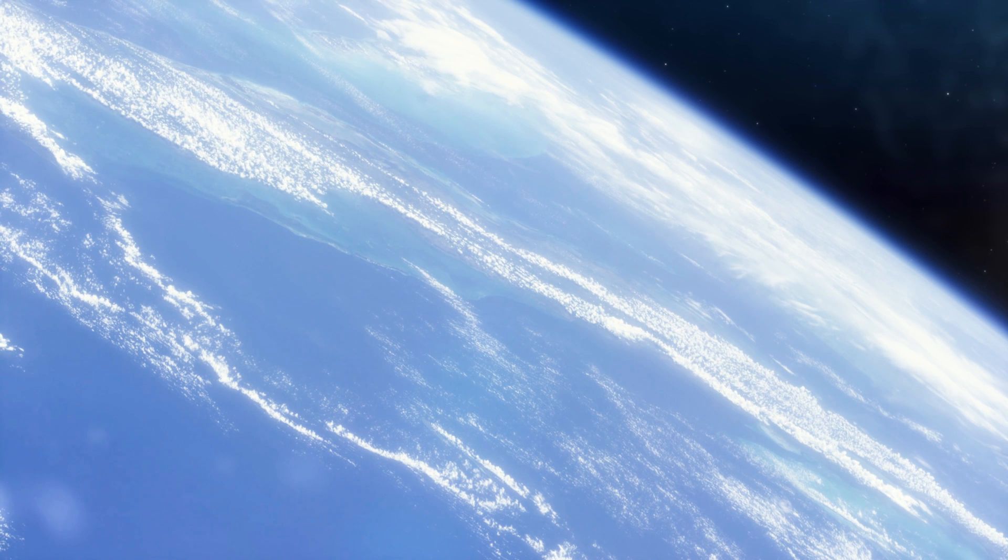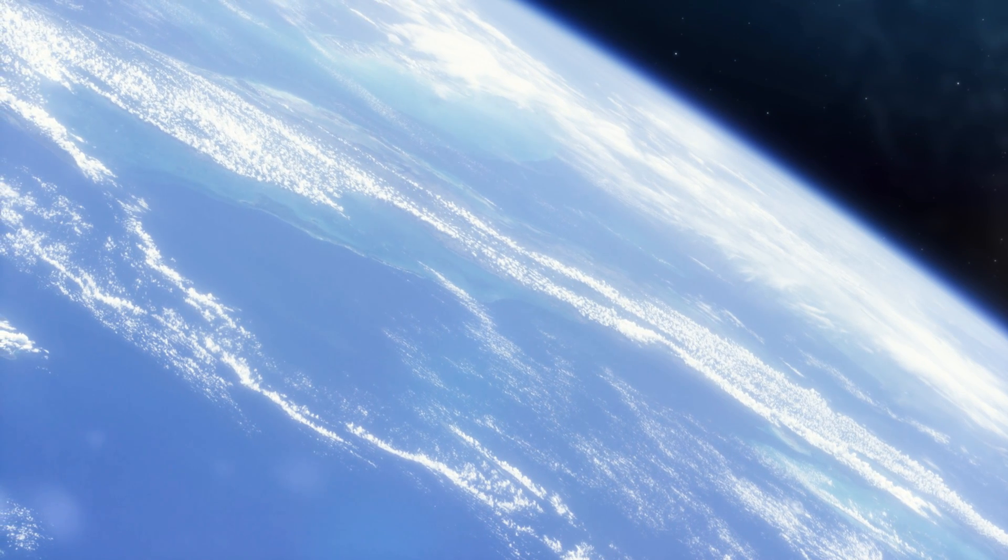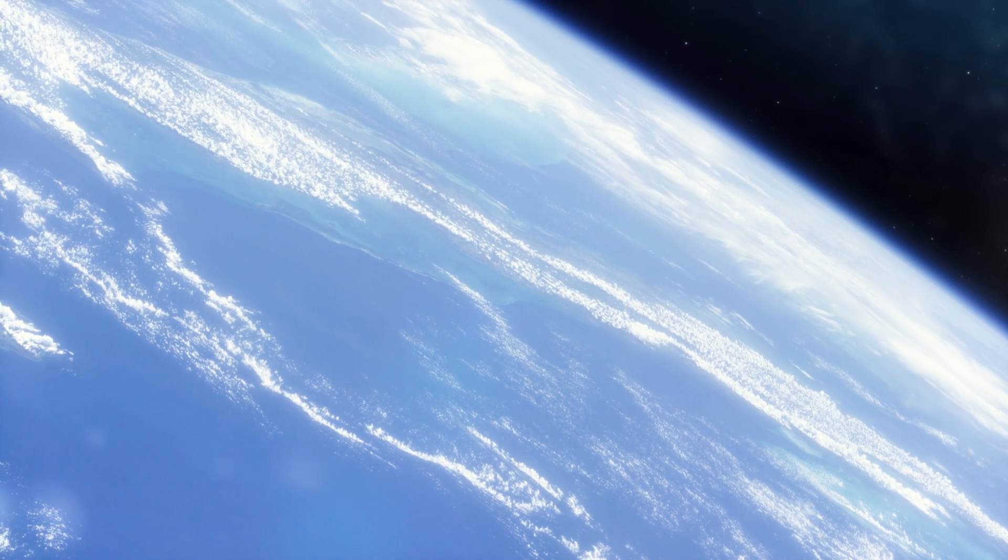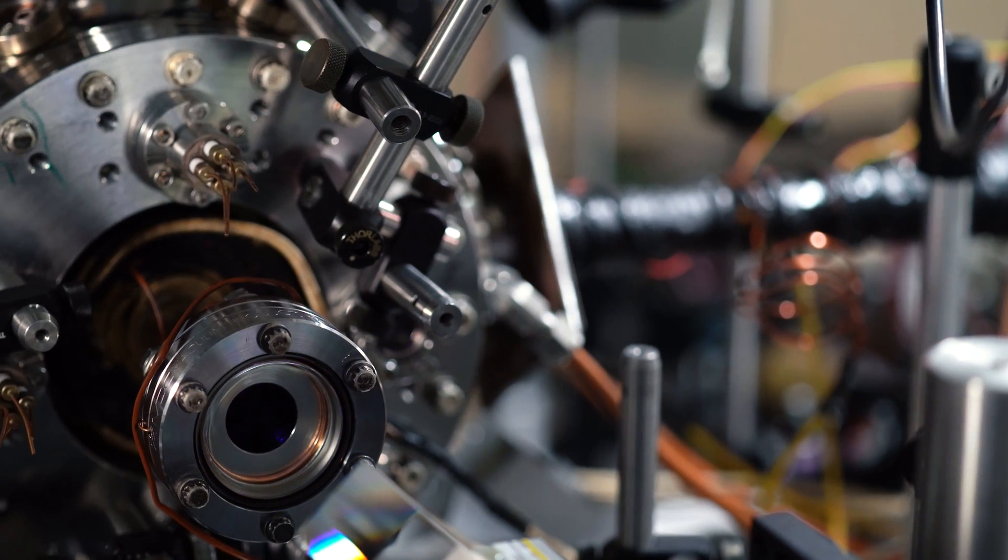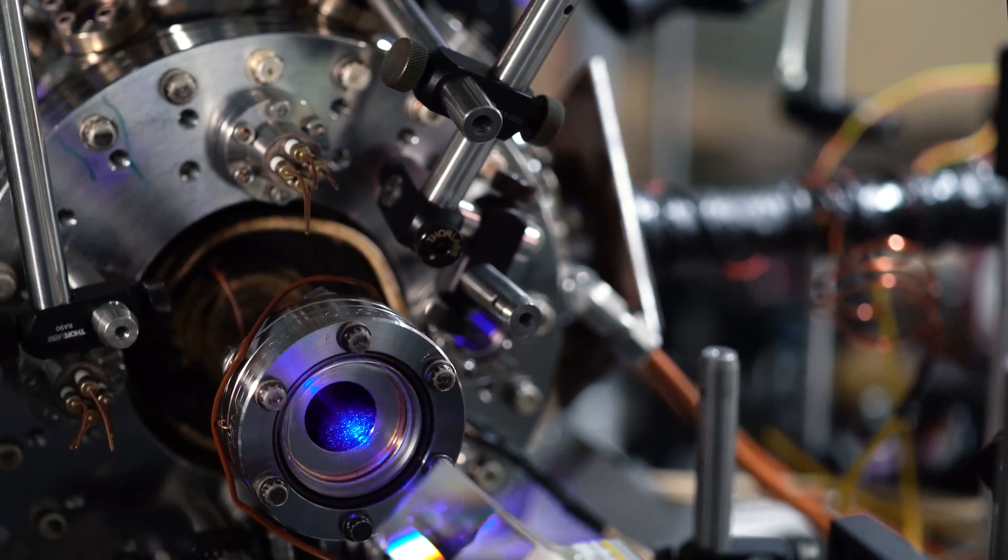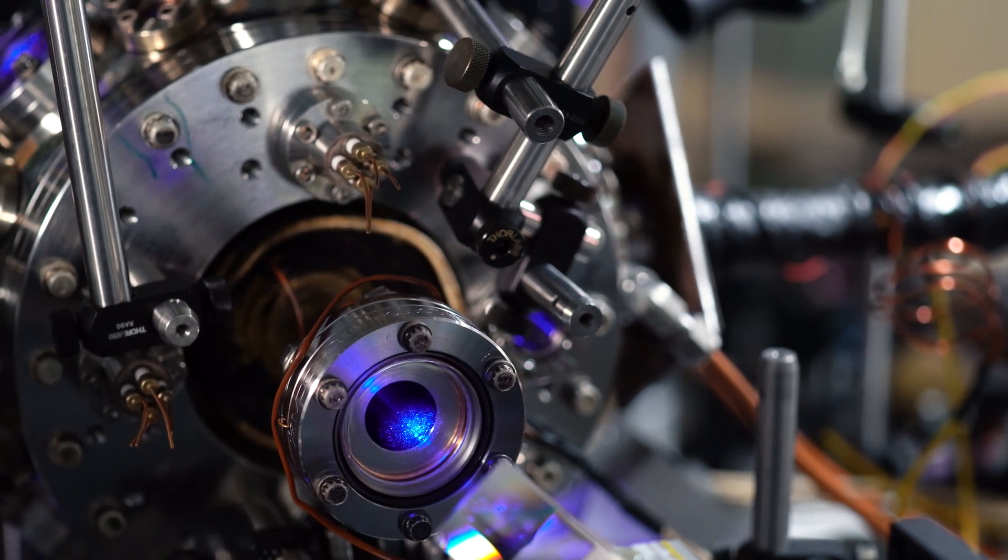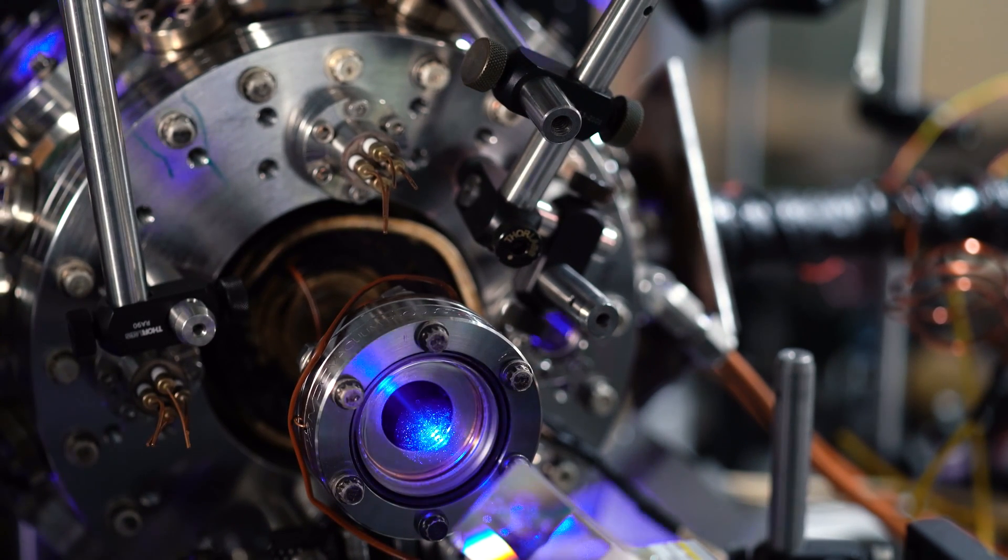Magnetic fields are very important for the way that the solar wind, charged particles from the Sun, interact with the Earth. The Earth's magnetic field protects us from some of those harmful particles. Actually, the geometry of the field we use for trapping our plasmas here is similar to the magnetic field that the solar wind interacts with when it comes and reaches the Earth.